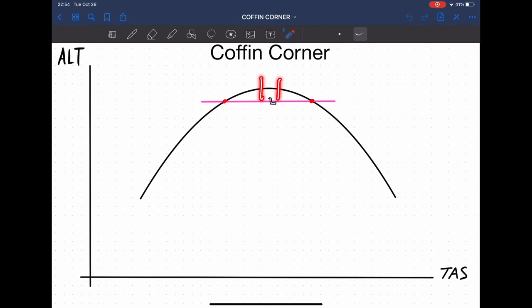If you find yourself flying near Coffin Corner and are not comfortable with the very tight speed spacing, the best thing that you can do is decrease your altitude. That will very quickly increase your speed margins.